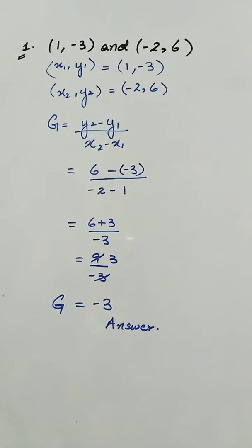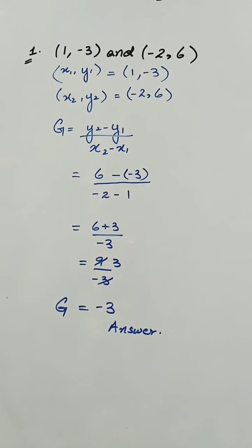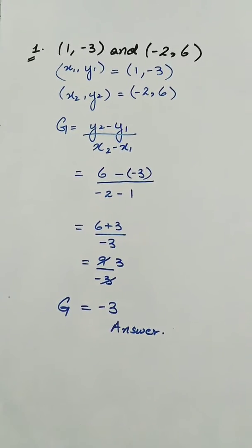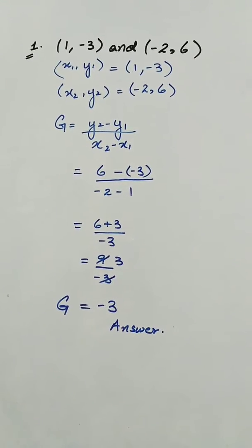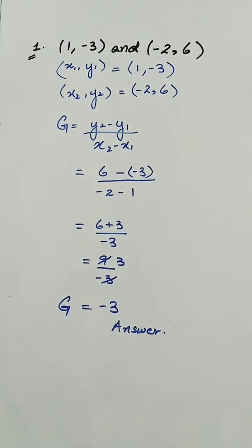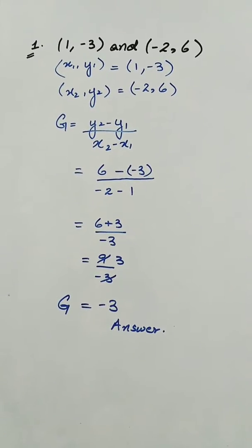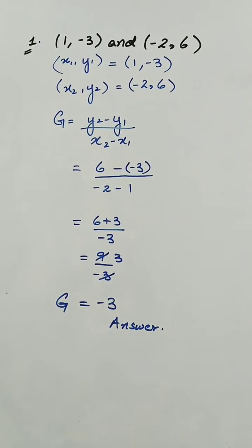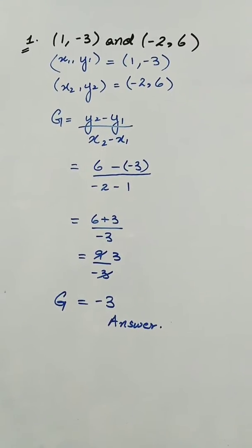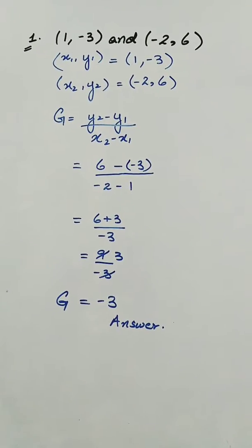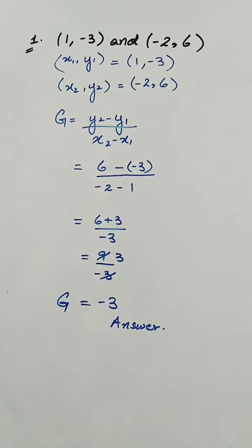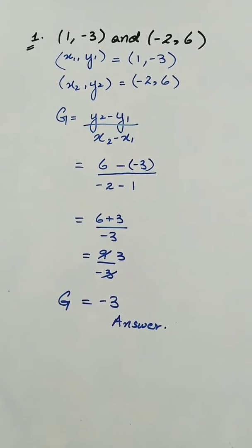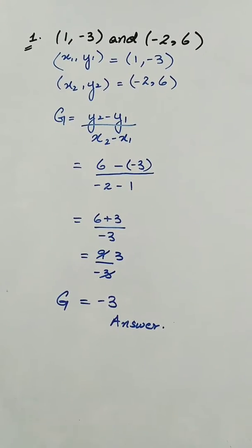Now look at the question in which the coordinates are given as (1, -3) and (-2, 6). So x1 and y1 here are 1 and -3, and x2, y2 here are -2 and 6. Now, putting these values into the formula, we have y2 as 6 minus y1 as -3, divided by x2 as -2 and x1 as 1.